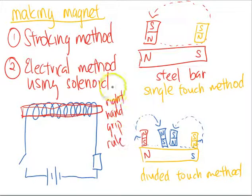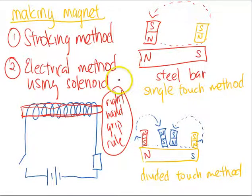But we will use this later on. For now, just know that there are two main methods of making magnets. First is the stroking method. Second is the electrical method using the solenoid. That's all.